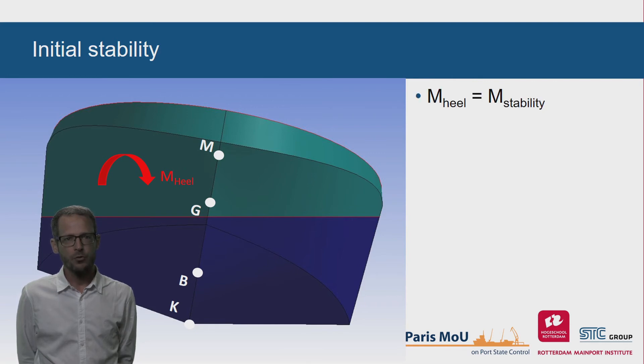In principle, there are now two moments acting on the hull. The healing moment, and the righting moment caused by the buoyancy. When the ship will reach a heeled equilibrium, both moments must be equal. The weight is a force through G, and the buoyancy is a force through B1.